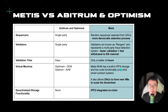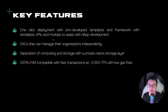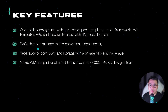MATIS also has built-in IPFS storage and low-code functionality, which is very helpful for developers. It allows developers an easier time creating and launching apps on the MATIS ecosystem. MATIS has a lot of one-click deployment with pre-developed templates, frameworks, APIs, and modules. They also have DACs, which stands for Decentralized Autonomous Companies. It's a bit like a DAO but more corporate or structured, allowing for better management of organizations.